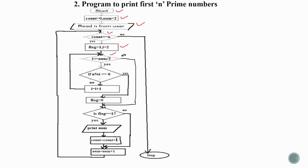We check i less than or equal to num/2. If the remainder is 0, we set flag to 0. After the inner loop, we check the flag. If flag equals 1, we print that number and increment count. If flag equals 0, we skip it. We increment num and repeat the outer loop until count is less than or equal to n, then stop.